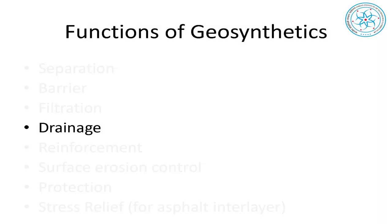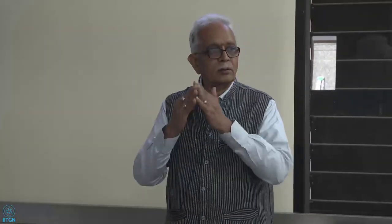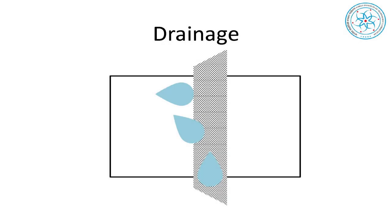Drainage means flow is occurring along the member — what we call planar flow. Whether the material is vertical or at an inclination, it allows flow along the plane of the material.